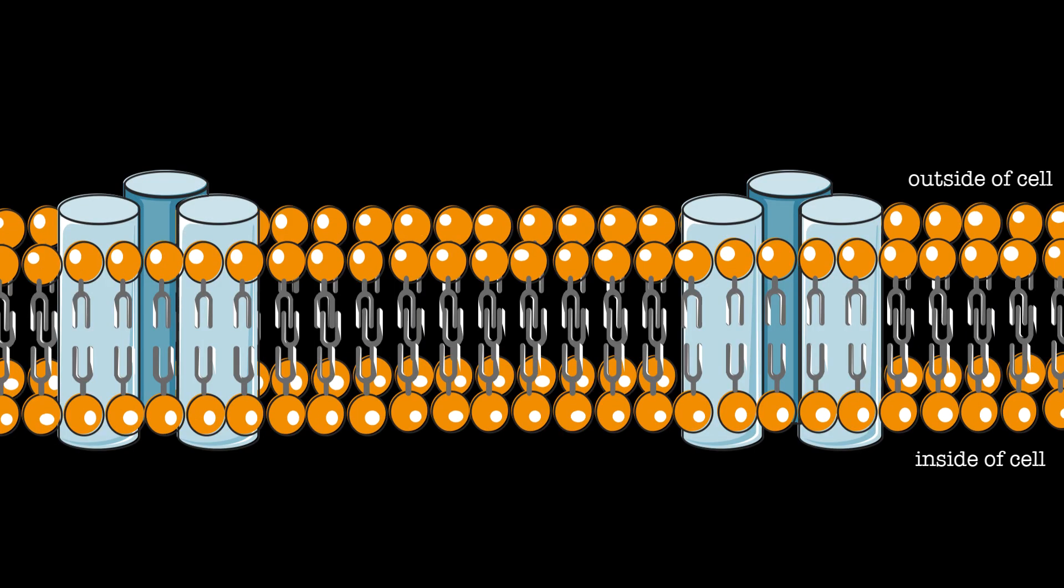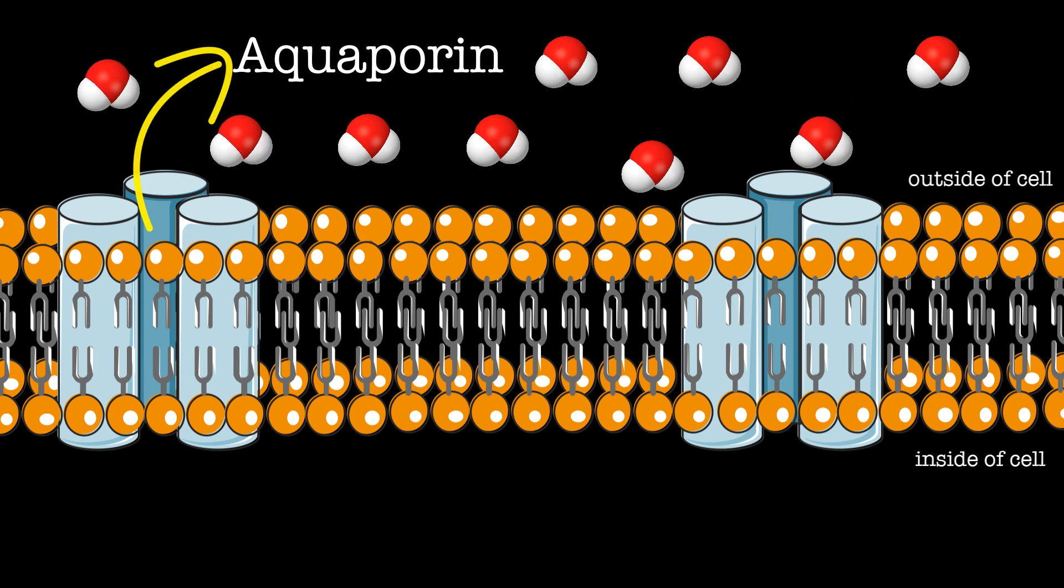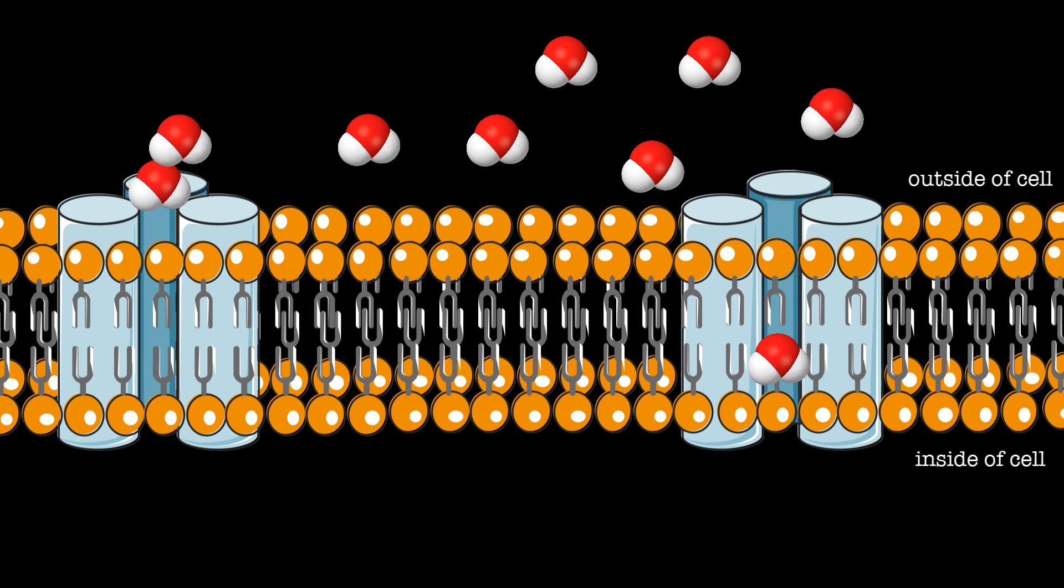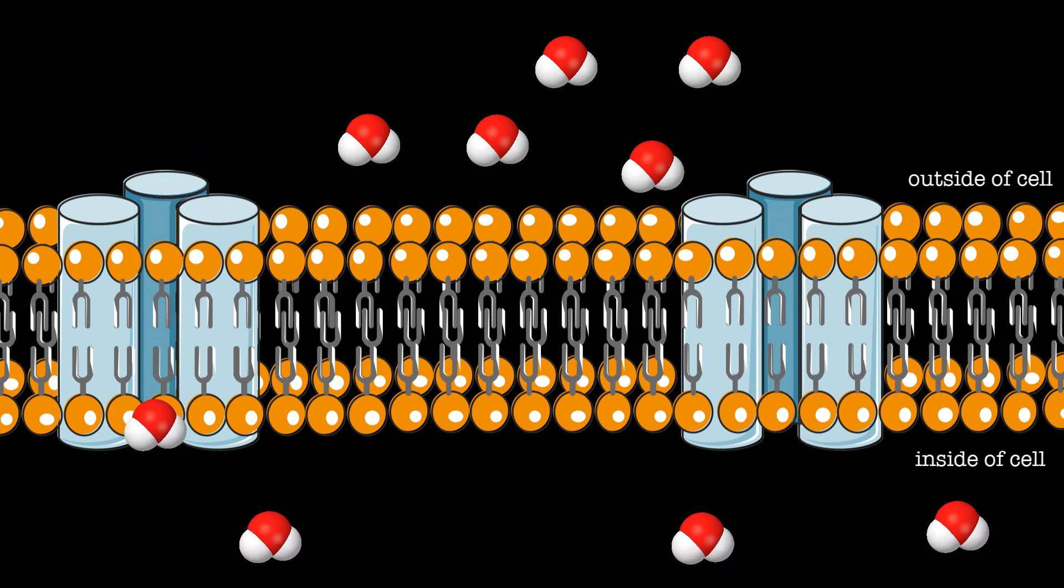If you remember, we mentioned that water can diffuse through phospholipid bilayer freely via osmosis. In some cells such as red blood cells and kidney cells, there is a special type of water channel called aquaporin. Aquaporins are transmembrane proteins that regulate the flow of water into and out of cells.